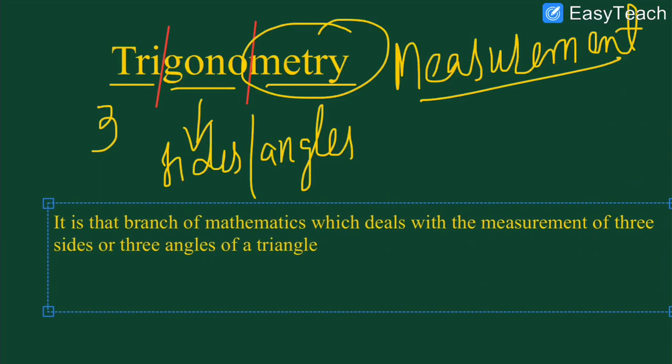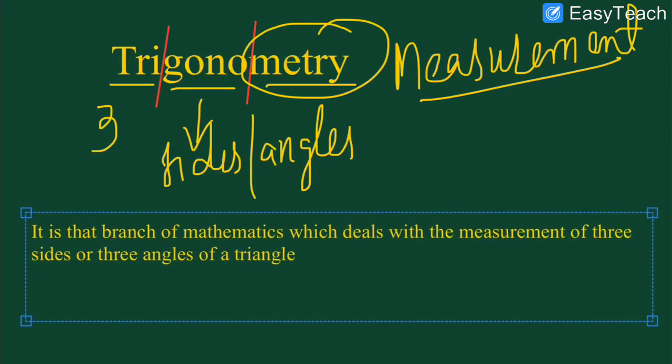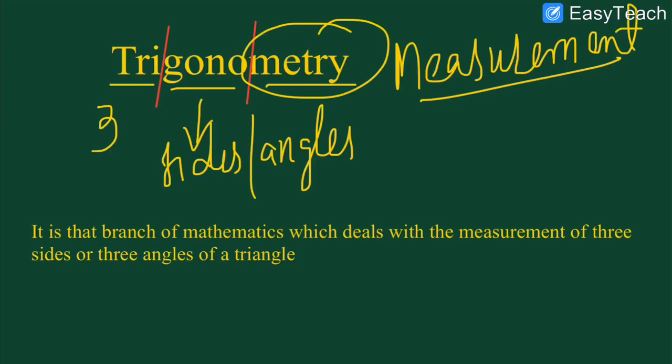Yahaan pe hum define karte hai trigonometry. Since it is the combination of three words, we can conclude that trigonometry is that branch of mathematics which deals with the measurement of three sides or three angles of a triangle.